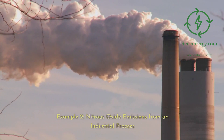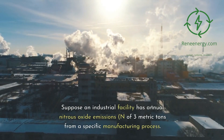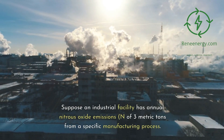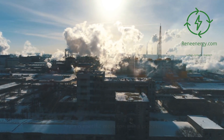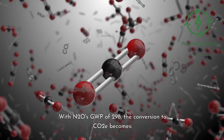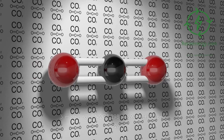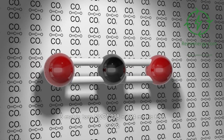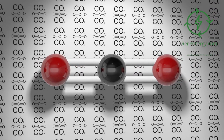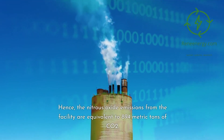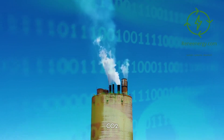Example 2: Nitrous oxide emissions from an industrial process. Suppose an industrial facility has annual nitrous oxide (N2O) emissions of 3 metric tons from a specific manufacturing process. With N2O's GWP of 298, the conversion to CO2e becomes: 3 metric tons N2O × 298 = 894 metric tons CO2e. Hence, the nitrous oxide emissions from the facility are equivalent to 894 metric tons of CO2.